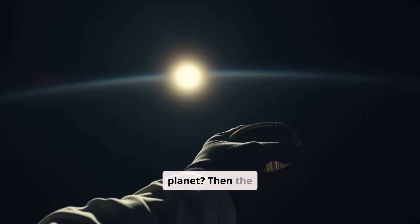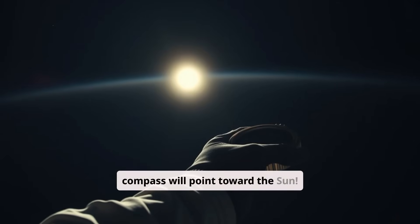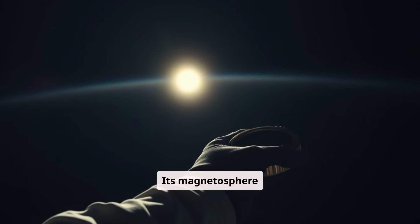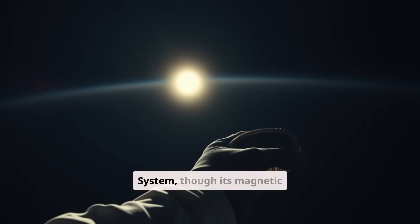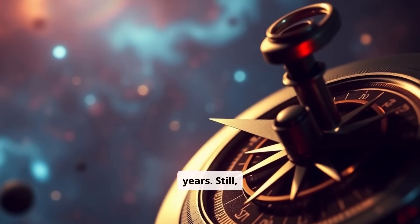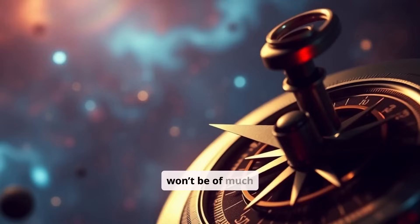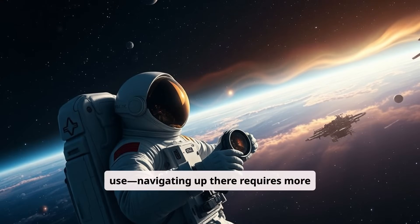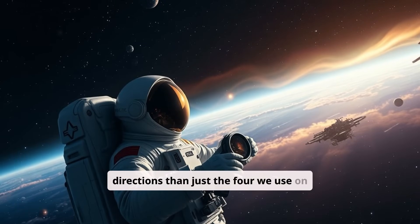And if we're not within range of any planet? Then the compass will point toward the Sun. Its magnetosphere stretches across the entire solar system, though its magnetic poles flip roughly every 11 years. Still, in space, a compass won't be of much use. Navigating up there requires more directions than just the four we use on Earth.